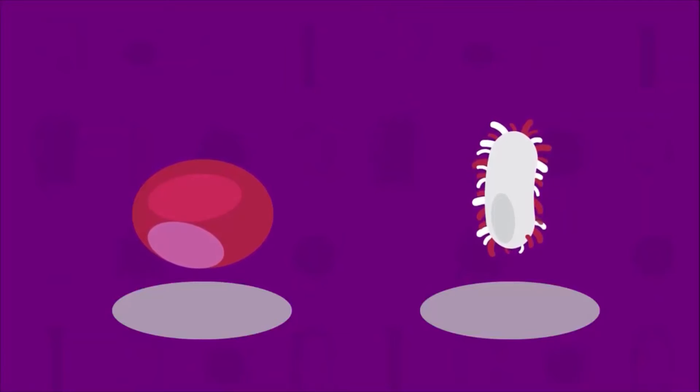Antibiotics affect specific parts of bacterial cells which human cells don't have. They stop the bacterial infection but do not harm the human cells.